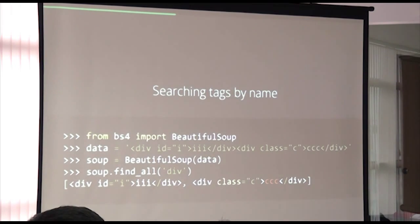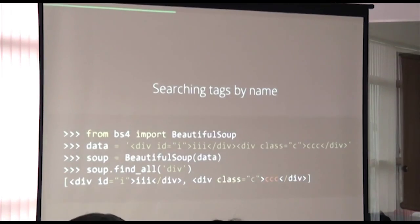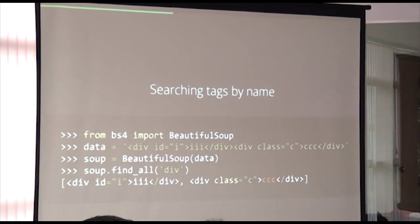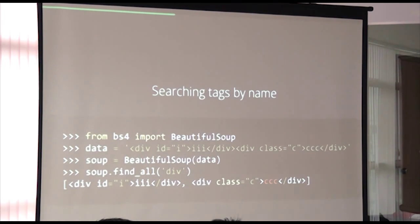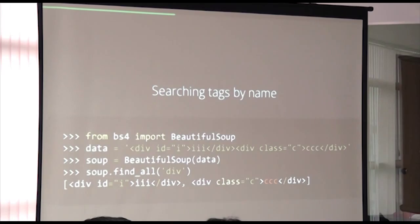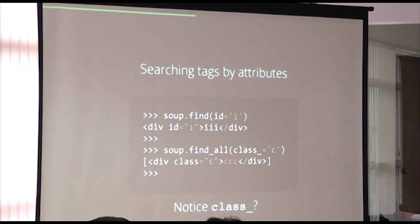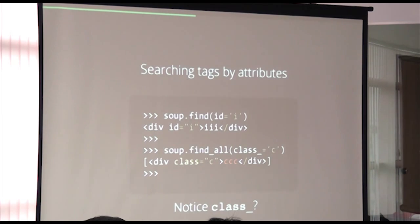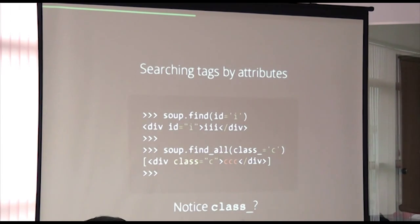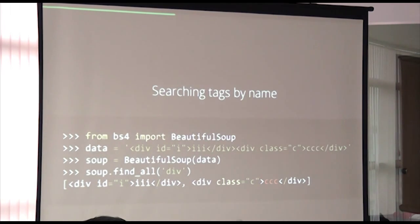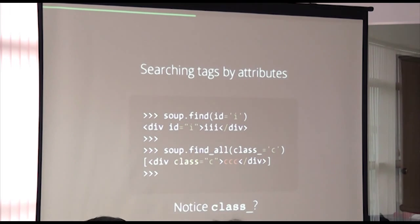find_all retrieves all the information we have. We can use the tag name — like an ID — to search. If find_all is given a tag name, it returns all matching elements. With one argument, it returns the element that matches.